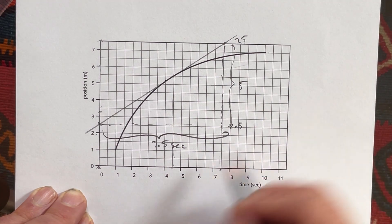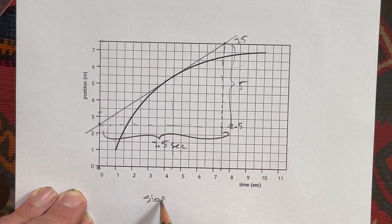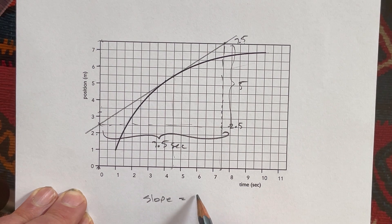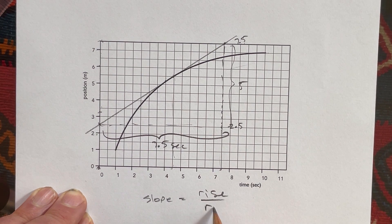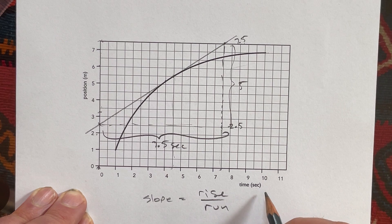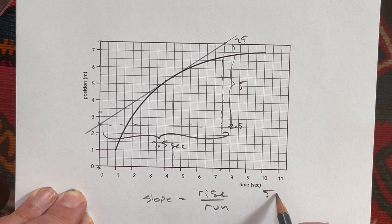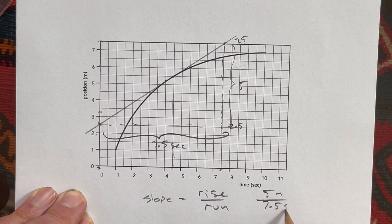And so the slope, so the slope is the rise over the run. Which in my case, the rise is 5 meters. The run is 7.5 seconds.